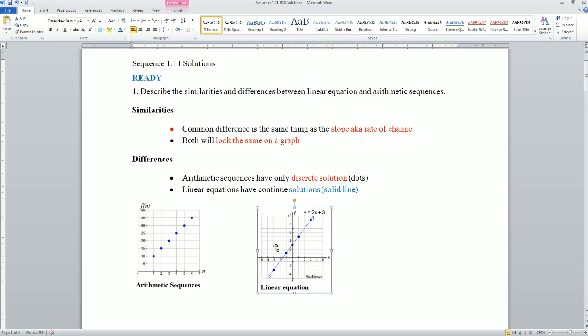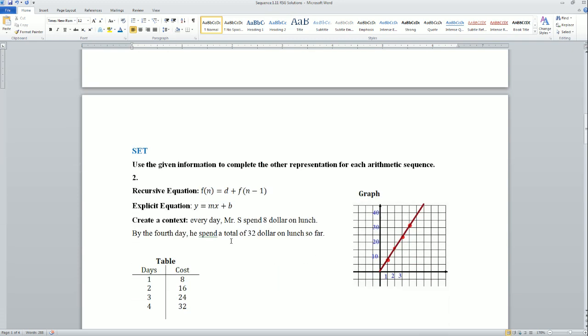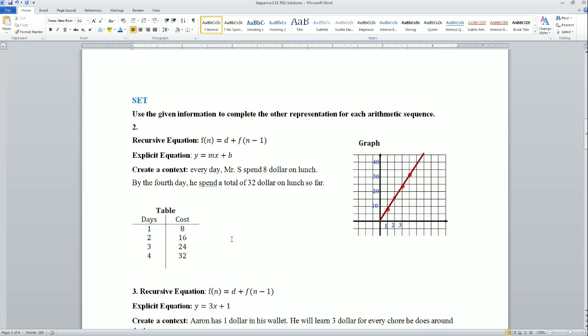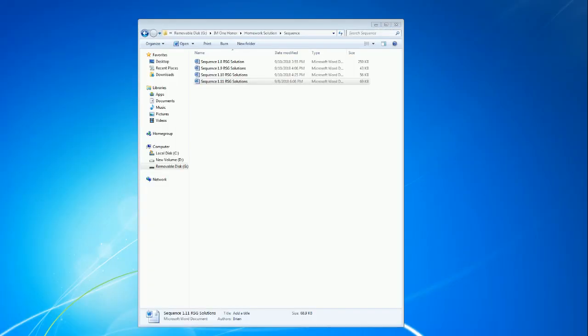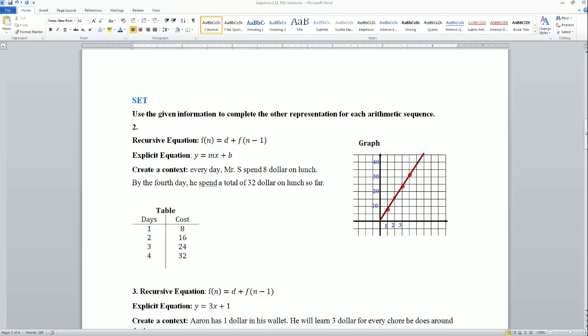That is the difference: the arithmetic sequence has finite or discrete solutions, but the linear equation has continuous solutions, so it's infinite. Next, let's look at the set part: using the given information to complete the other representation for each of the arithmetic sequences.